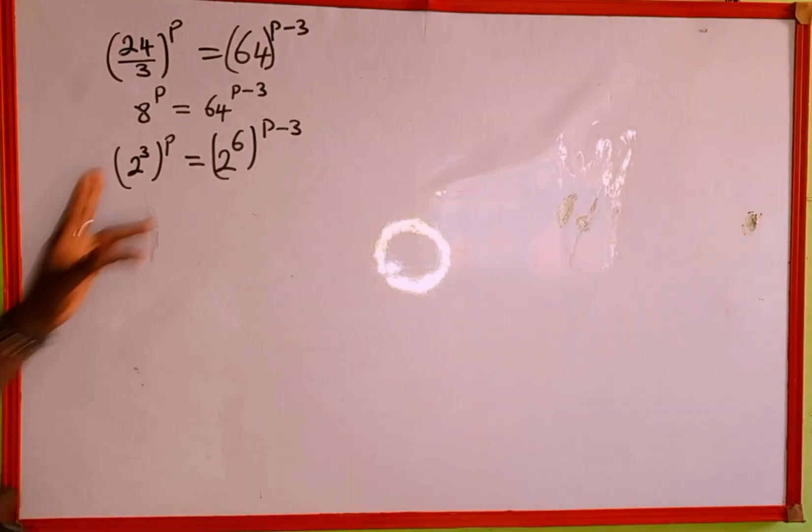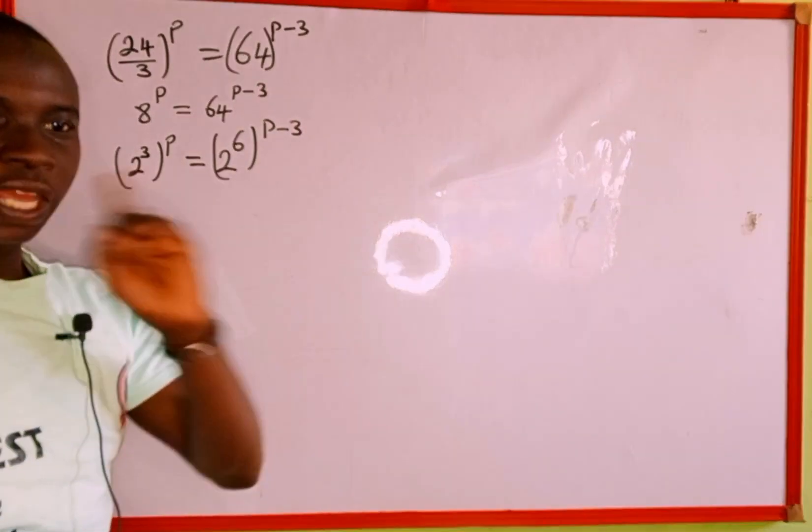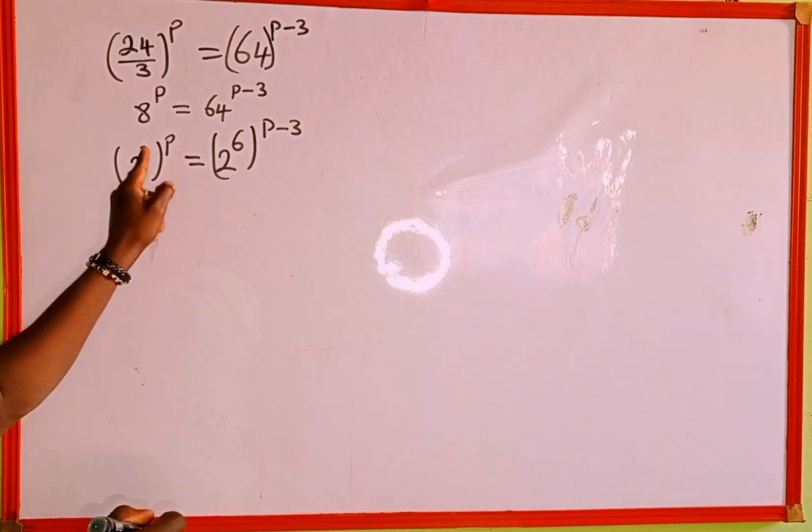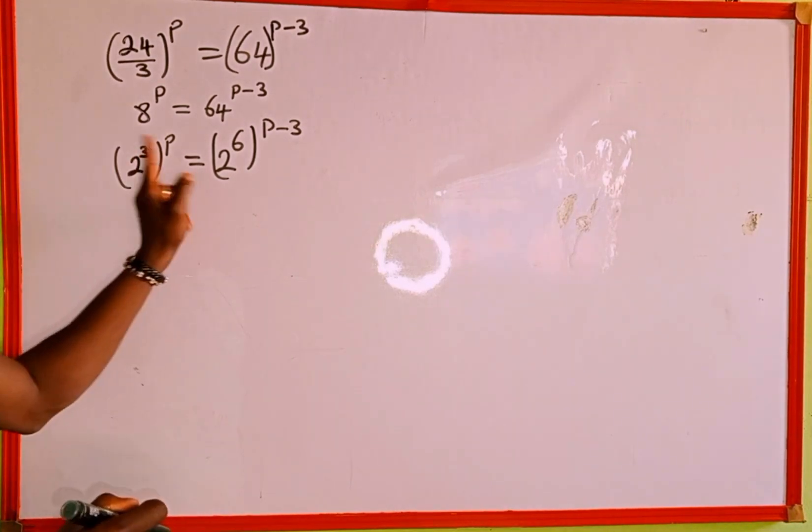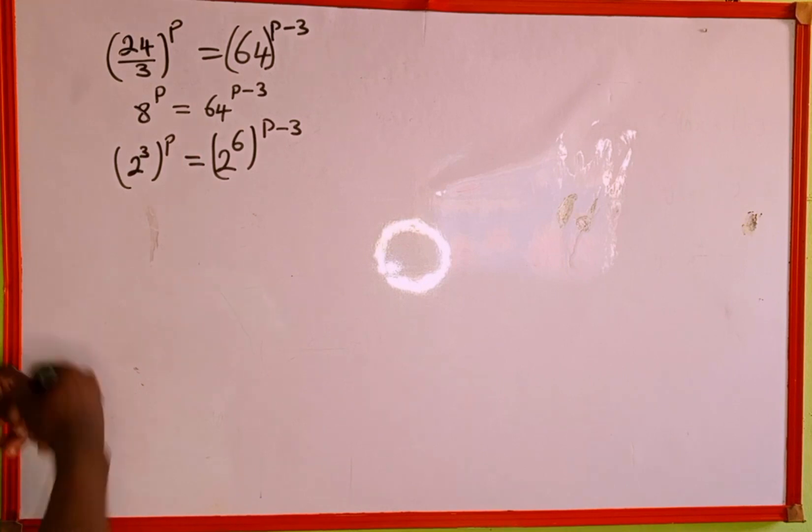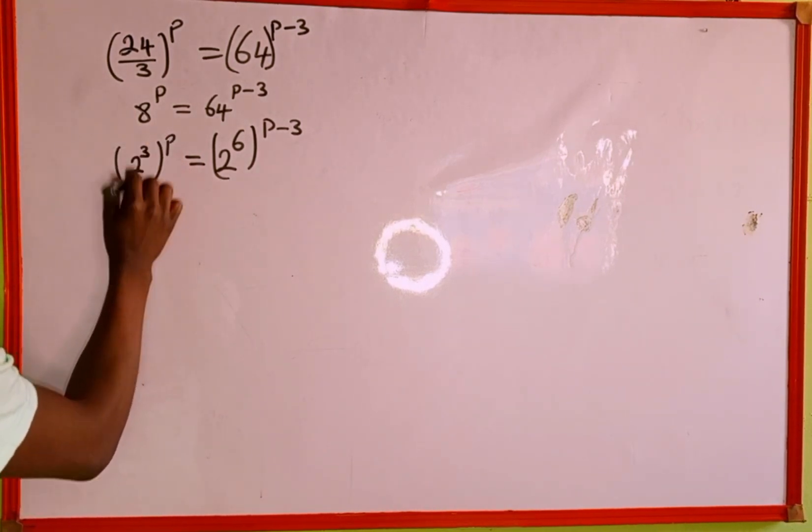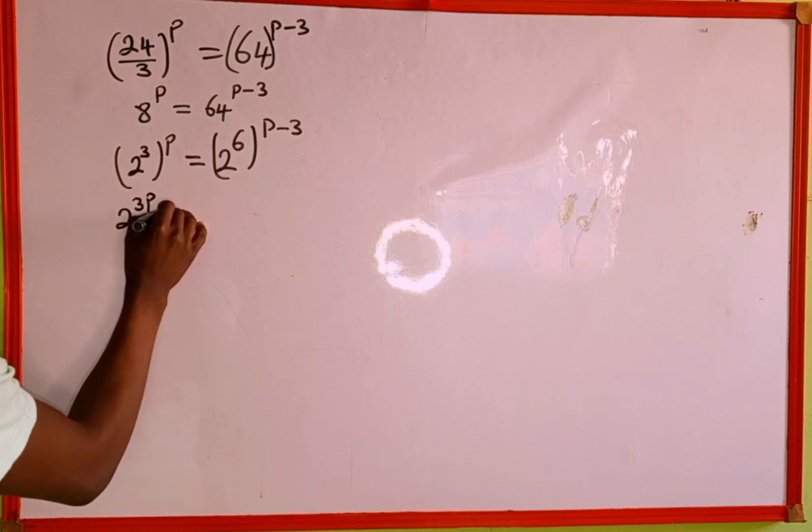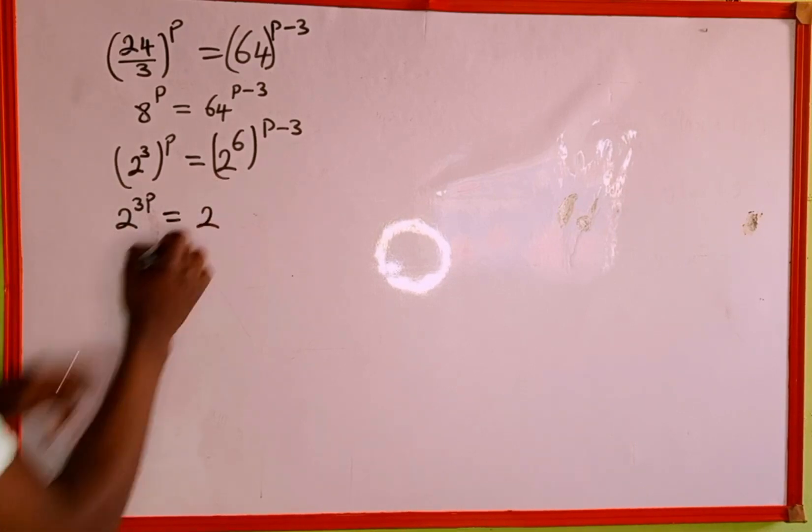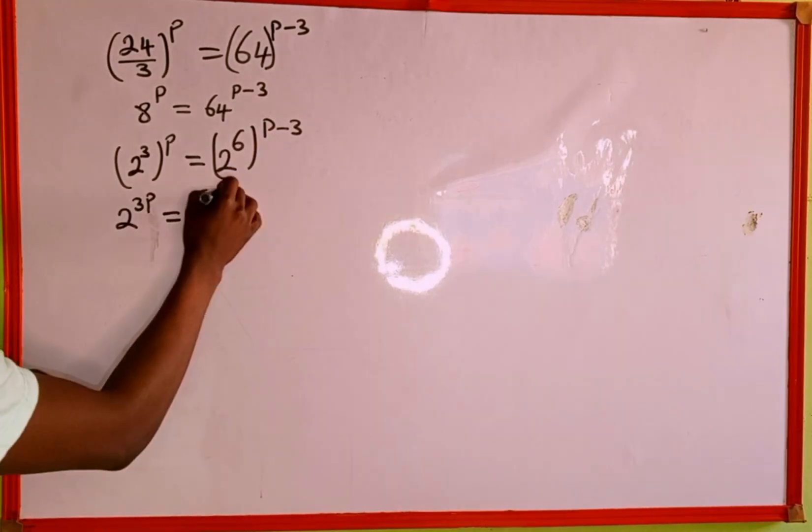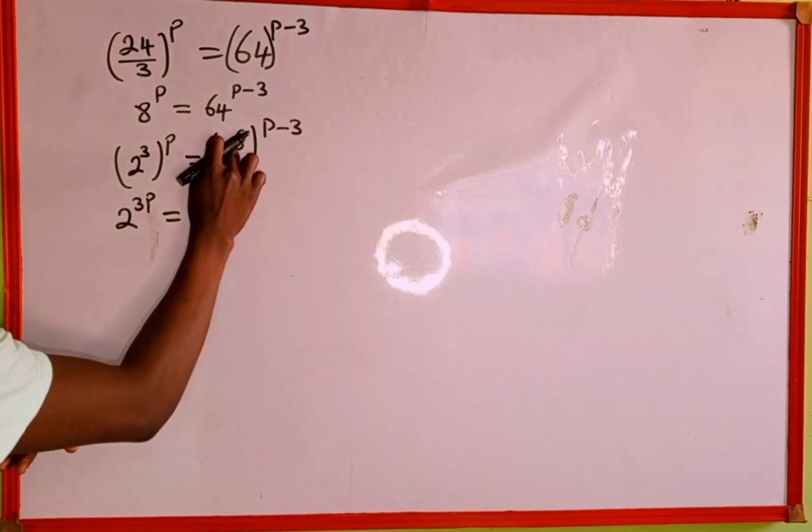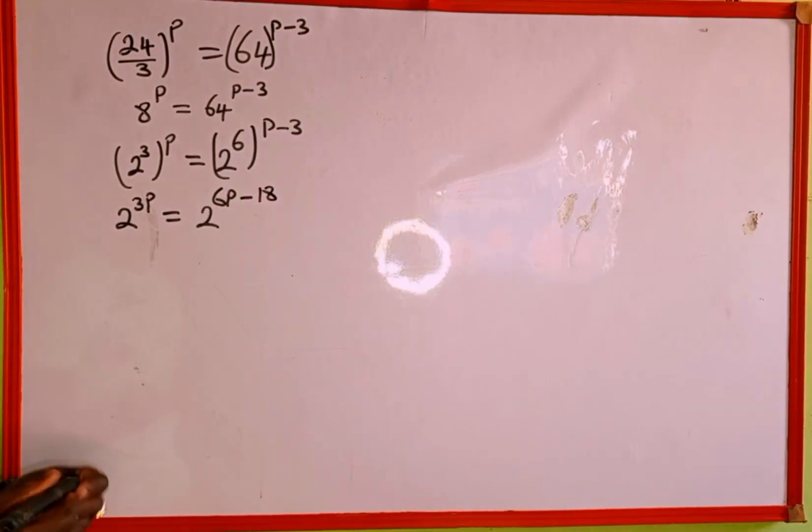Next we recall the power law of indices. Since 2 is raised to the power of 3 and all is raised to the power of p, we can multiply the two powers together. So we have 2 to the power of 3 multiplied by p, giving us 3p, which equals 2 to the power of 6 multiplied by p is 6p, minus 6 multiplied by 3 is 18.